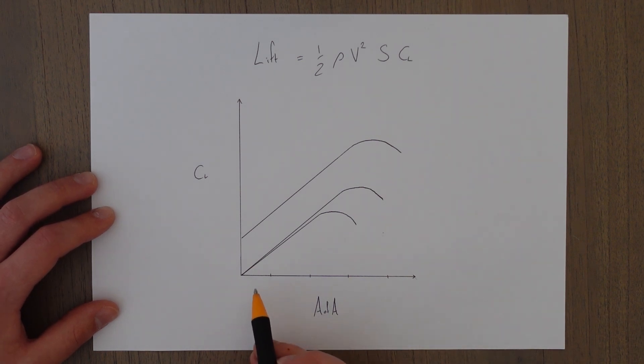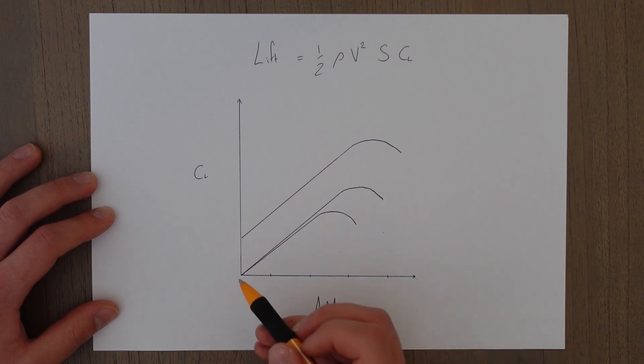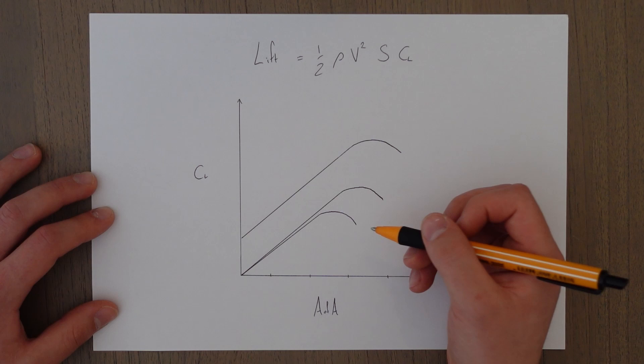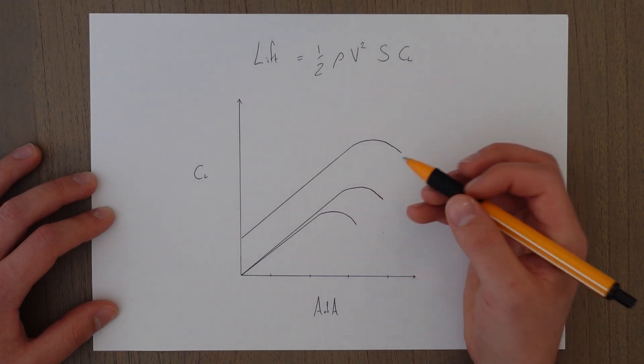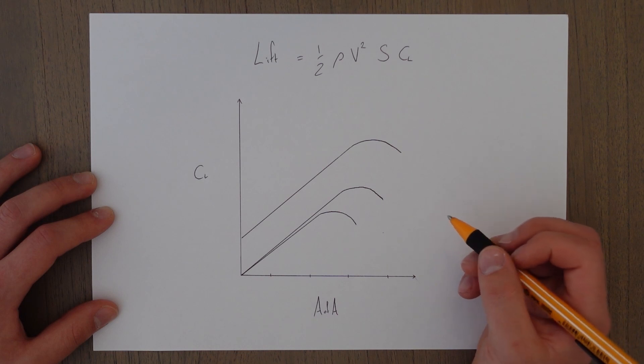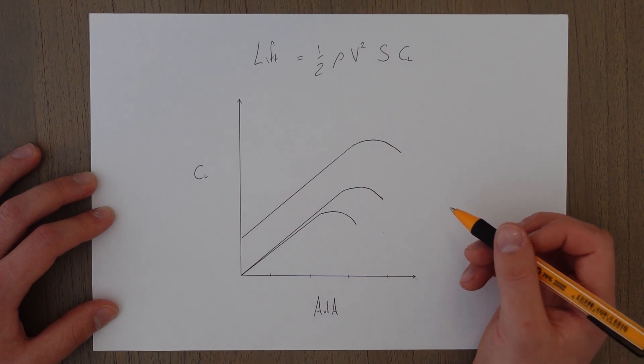Angle of attack, as we see along this bottom axis here, increases up until a point in which it suddenly drops off. That drop off point, that stalling angle of attack, will be the same for the wing design at all speeds, disregarding all external factors.